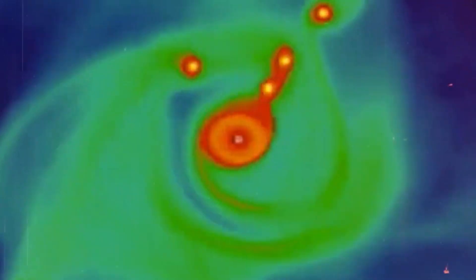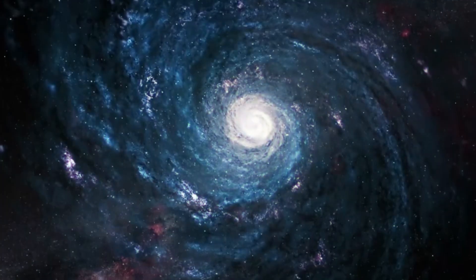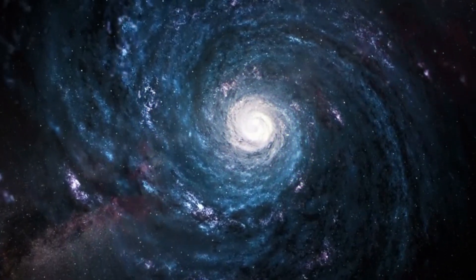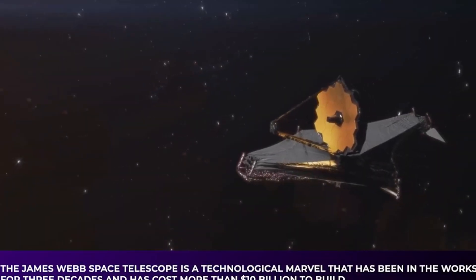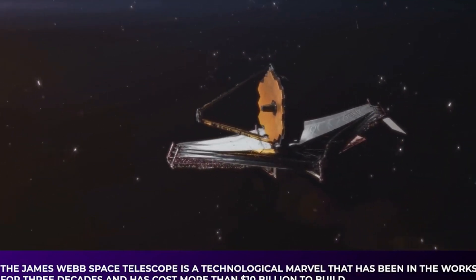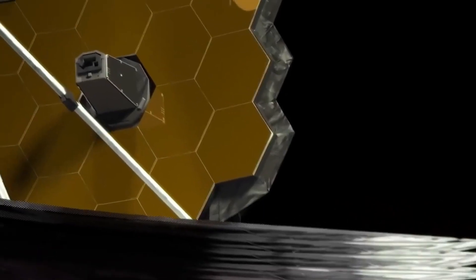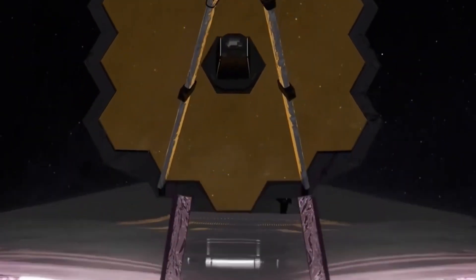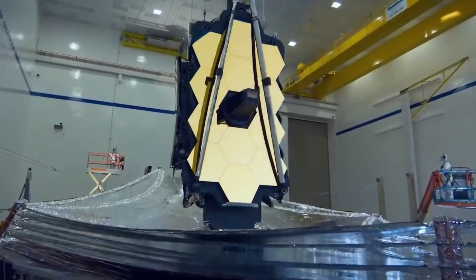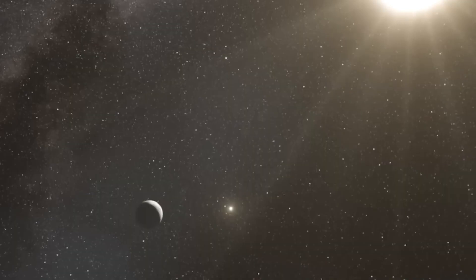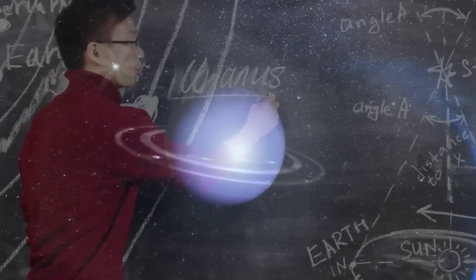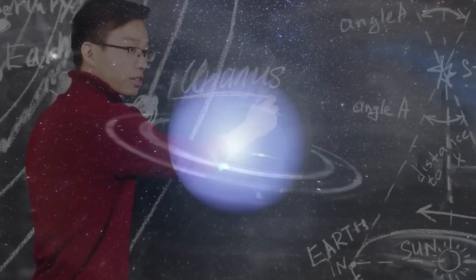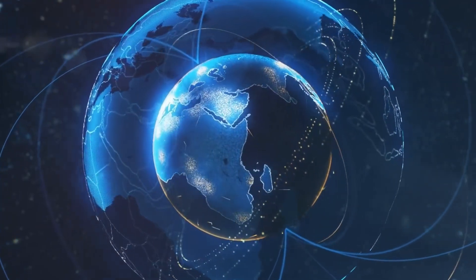The James Webb Space Telescope possesses a remarkable ability to gaze deep into the universe, a feat that essentially lets it peer back in time. The farther an object is from us, the longer its light takes to reach our telescopes. Consequently, when JWST focuses its lenses on a distant galaxy, it isn't merely capturing a snapshot of the present. Instead, it's like a cosmic time machine, revealing what that galaxy looked like billions of years ago when its light embarked on its interstellar voyage. This unique capability allows scientists to delve into the ancient history of our universe, a time when the first stars and galaxies were taking shape.